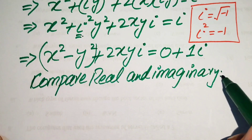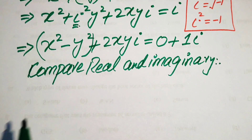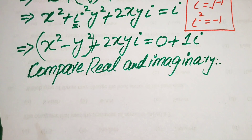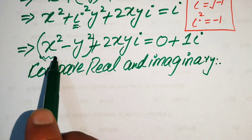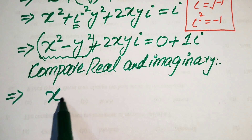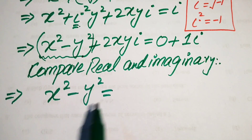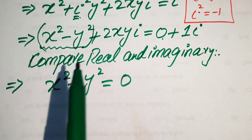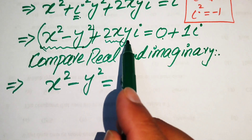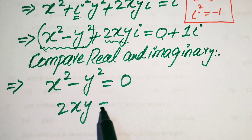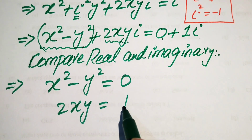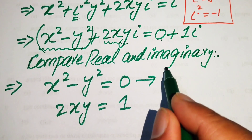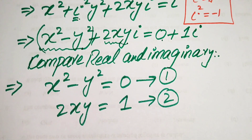The part without iota is the real part, and the part with iota is the imaginary part. On the left-hand side the real part is x squared minus y squared, and on the right-hand side the real part is zero — this is Equation 1. The coefficient of iota is the imaginary part: 2xy equals 1 — this is Equation 2.